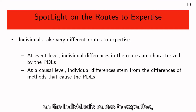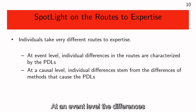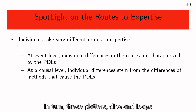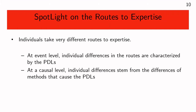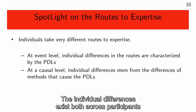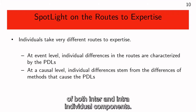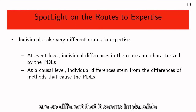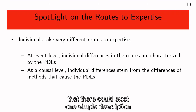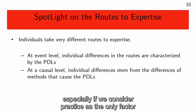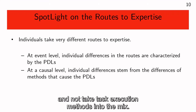To summarize, by putting the spotlight on individuals' routes to expertise, we observed that individuals take different routes. At a granular level, the differences in these routes are characterized by events of plateaus, dips, and leaps. These plateaus, dips, and leaps stem from individual differences in task execution methods and the time and timing of using them. The individual differences exist both across participants and over the course of learning — therefore consisting of both inter- and intra-individual components. These routes from novice to expertise are so different that it seems implausible that one simple description like the power law could explain all individuals' learning, especially if we consider practice as the only factor and not take task execution methods into account.